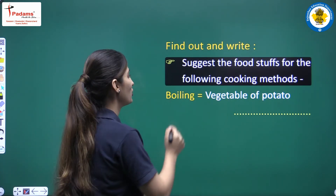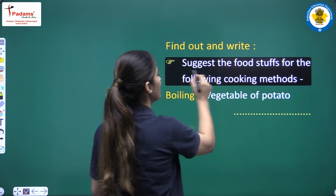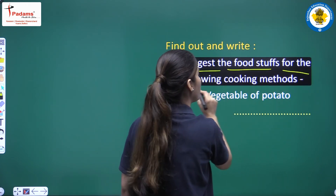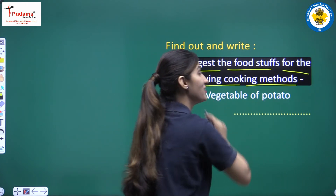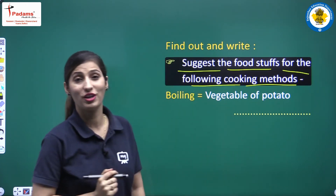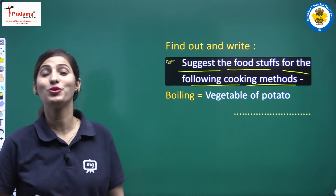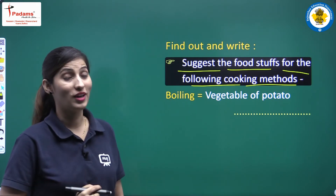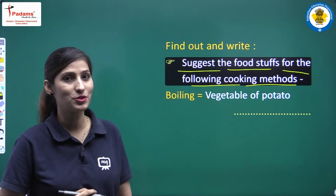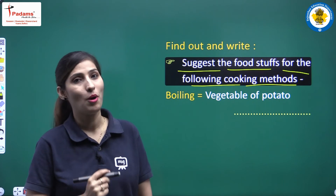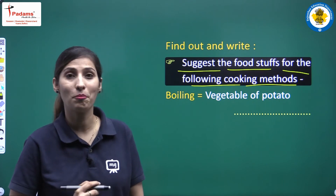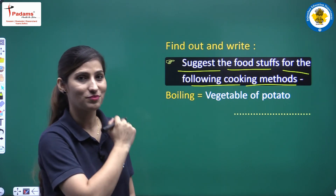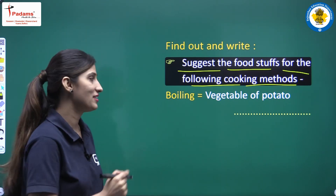Our next question is: suggest the foodstuffs for the following cooking methods. Here we are talking about different cooking methods — boiling, baking, roasting. Let's see.